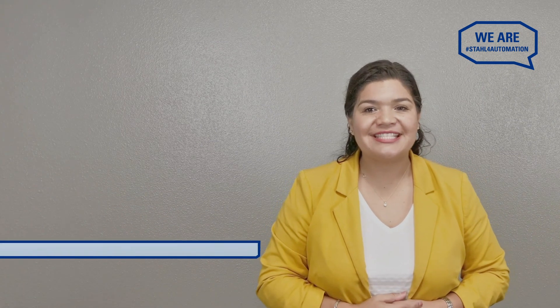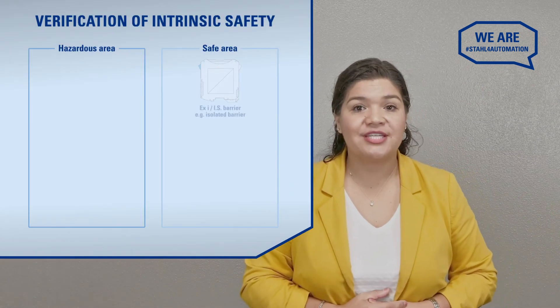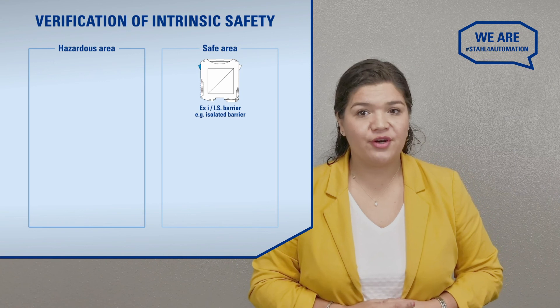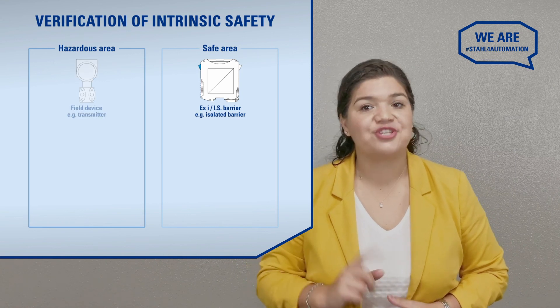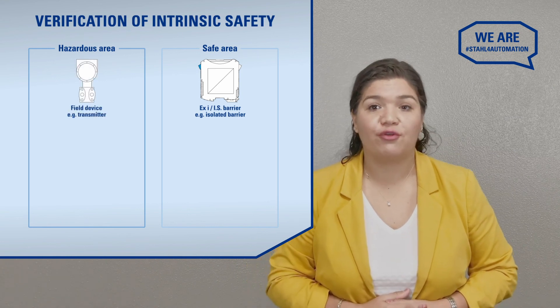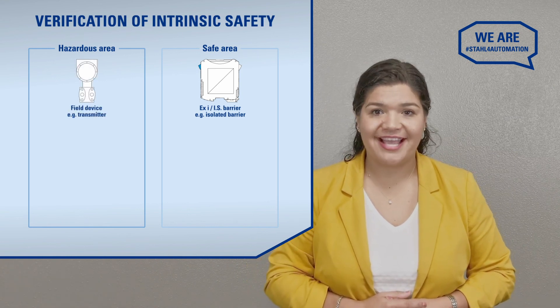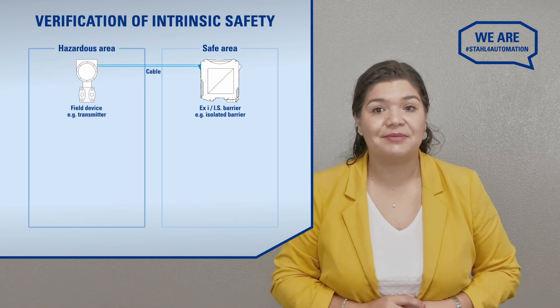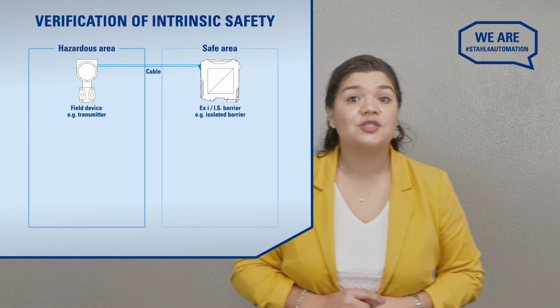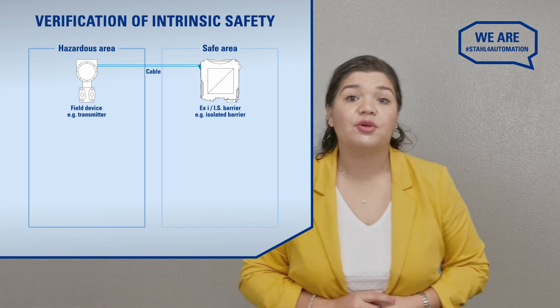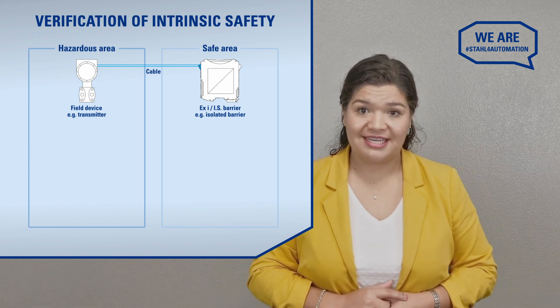Intrinsically safe circuits contain a barrier or associator apparatus, a transmitter or field device, and a cable in between. The three of them together must form an intrinsically safe loop.